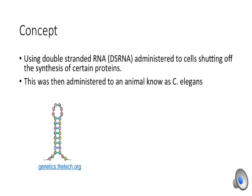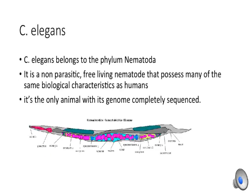The concept was using double-stranded RNA administered to cells, shutting off the synthesis of certain proteins. This was then administered to an animal known as C. elegans. C. elegans belong to the phylum Nematoda. It is a non-parasitic, free-living nematode that possesses many of the same biological characteristics as humans.